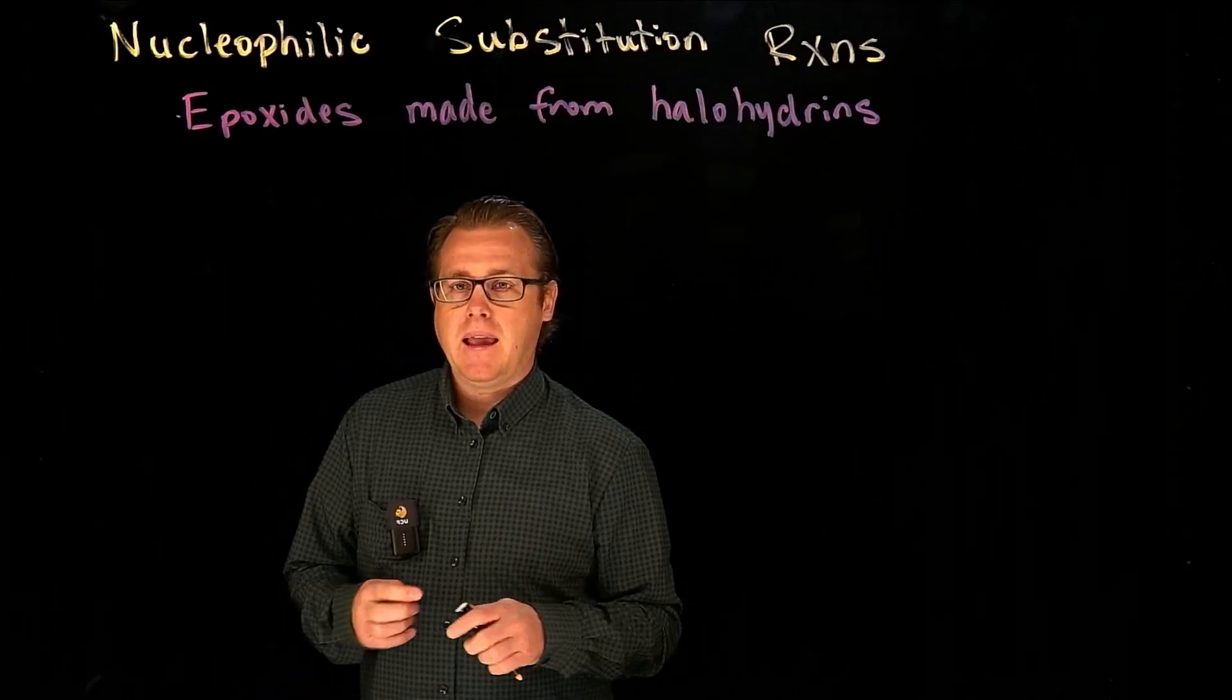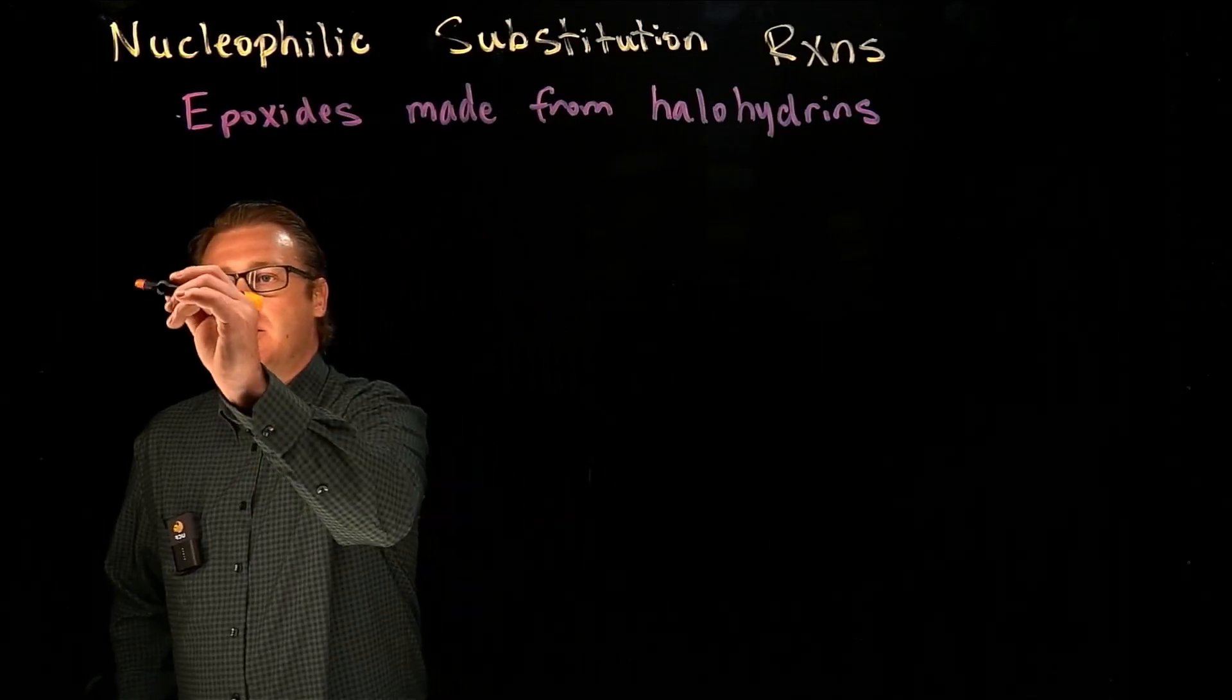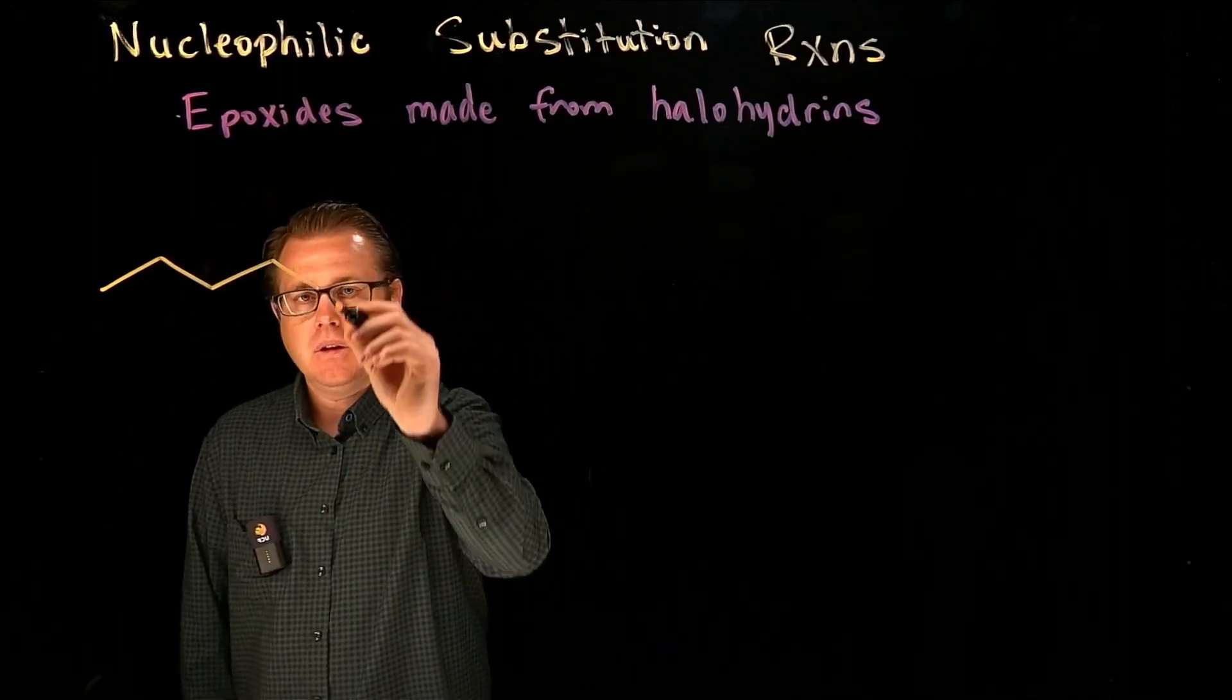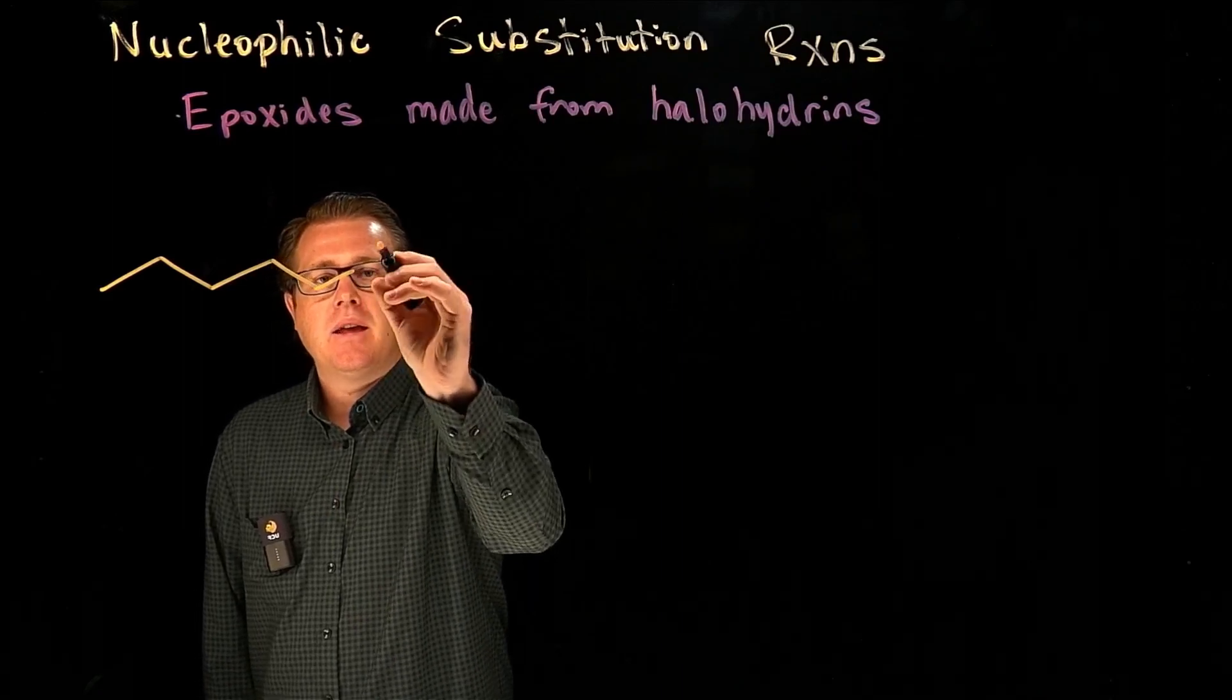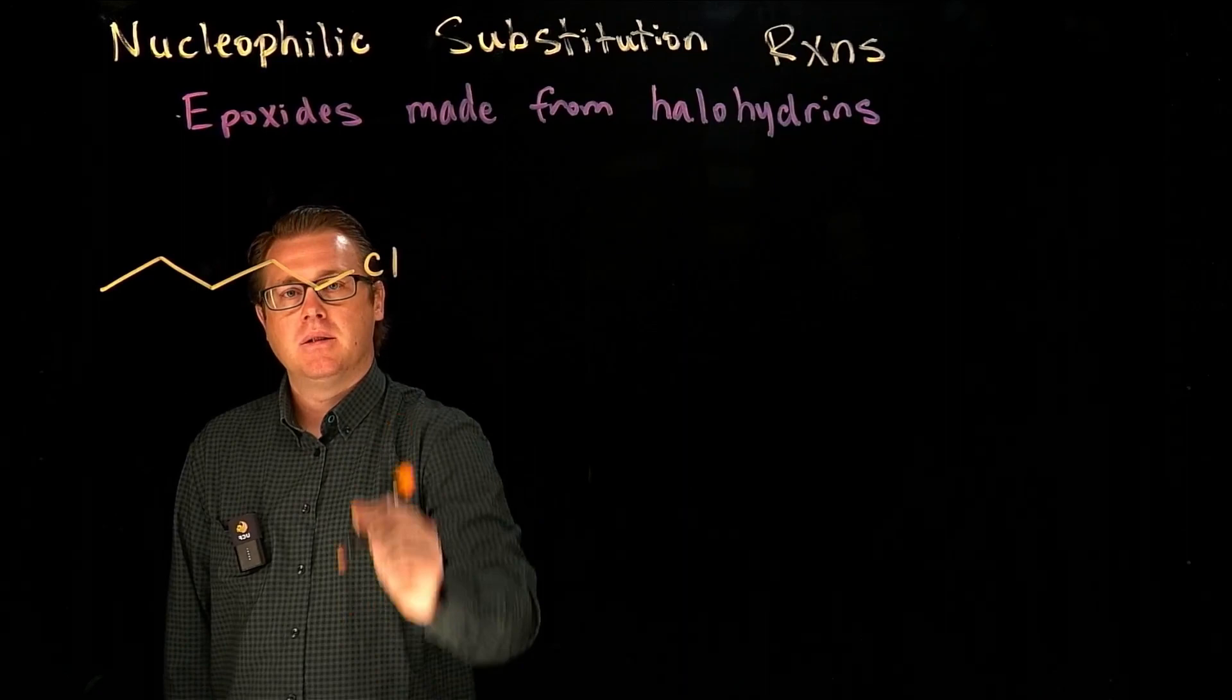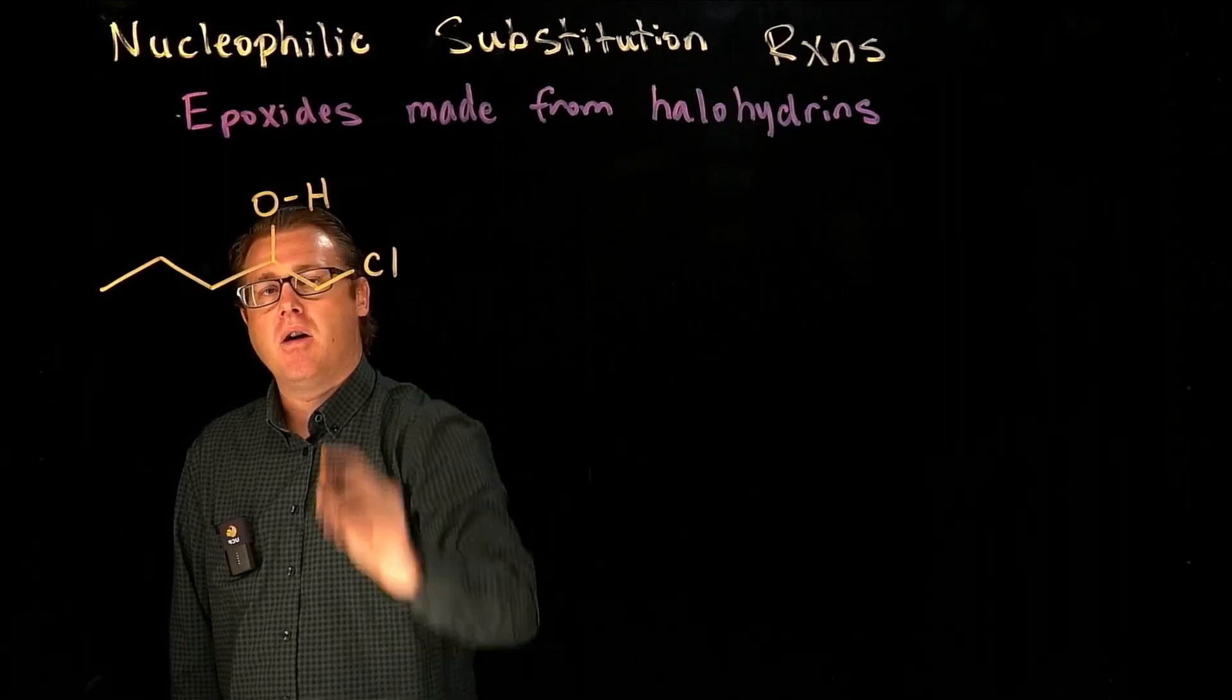Now let's make an epoxide from a halohydrin. So recall that a halohydrin is something where you have a halogen on one carbon and on the adjacent carbon you have an alcohol.